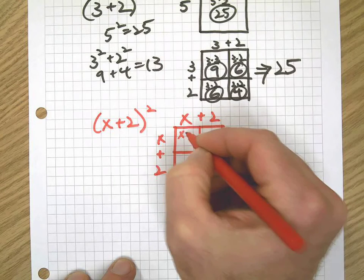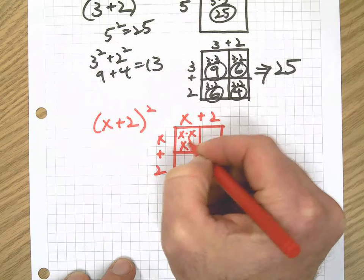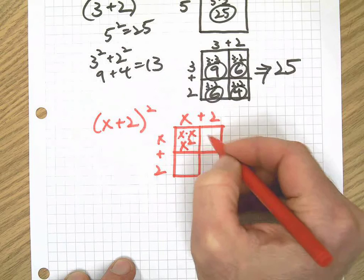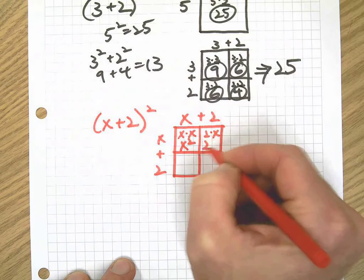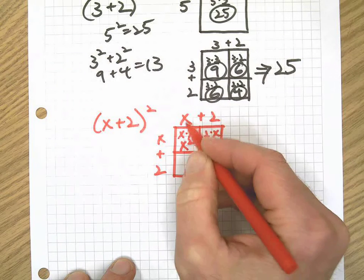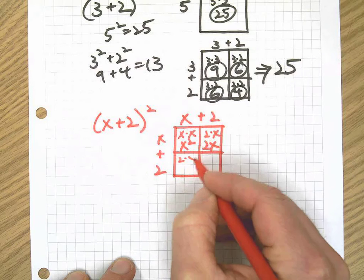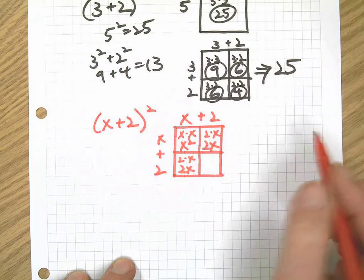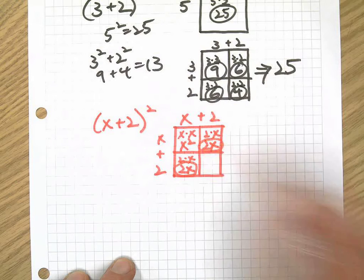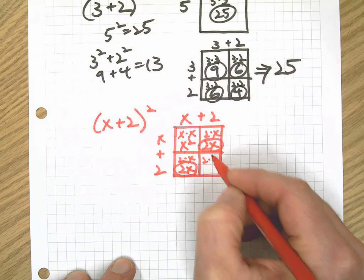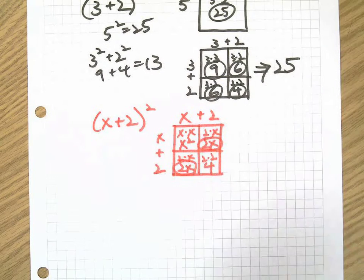x times x is x squared, 2 times x is 2x, 2 times x there is 2x. Notice how when we're squaring, these two are the same. And then finally, 2 times 2 is 4.